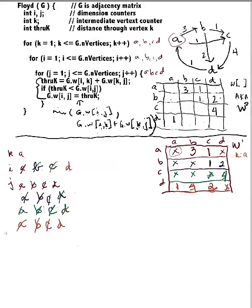Okay, so that takes care of that. Now we have to move on to our next K, which is B. And we're building our W2, where K equals B.